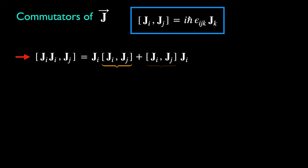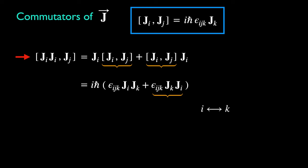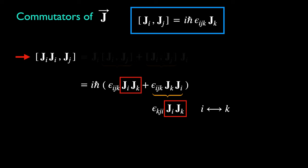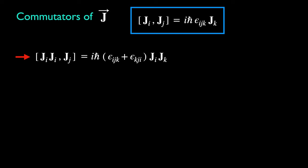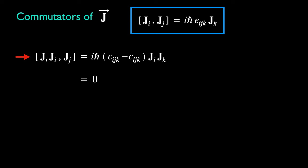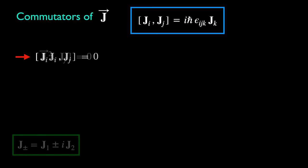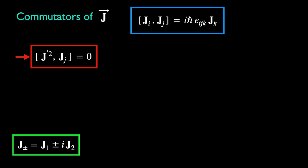These two commutators are the same — one with Ji on the left and the other on the right. We can write the second term with the dummy indices i and k interchanged, so that the indices of the two operators J match on both terms. With the epsilon symbol anti-symmetric in the indices i and k, we can switch back their ordering, incurring a minus sign. Of course, this means the terms cancel. Thus we have proved that J-squared commutes with any component of J using just the rotation algebra.